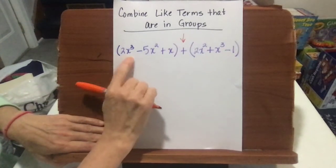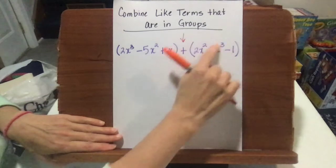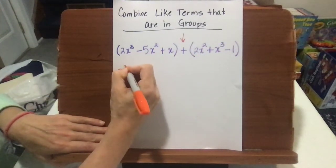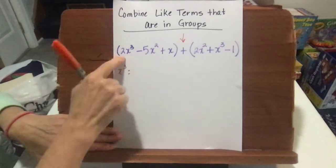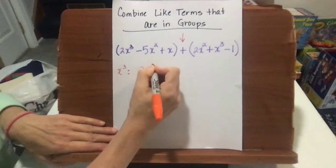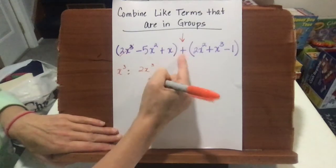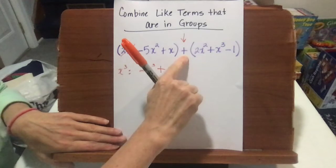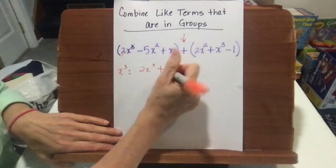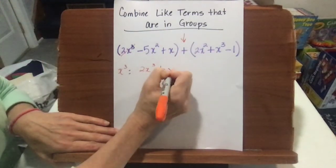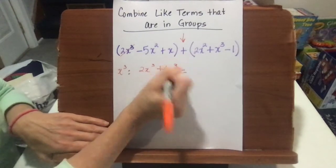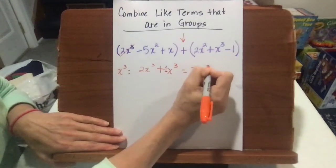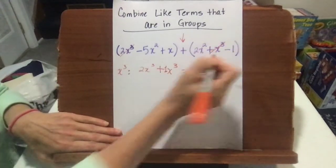We have 2x cubed in this first group, and we have to look to see if we have an x cubed in that second group. We categorize — we say x cubed, we have 2x cubed, we can cross it out. We always go to this middle operation, and we're going to add it to a positive x cubed. Remember, there's a 1 in front of this x cubed, so 2x cubed plus 1x cubed is 3x cubed. We're done with x cubed, so cross them out.